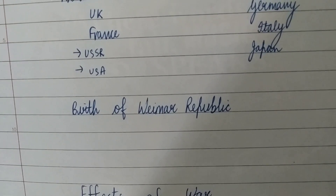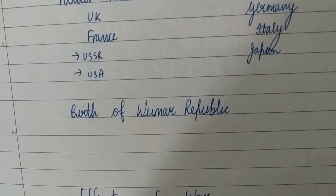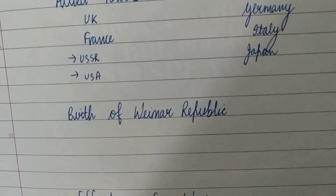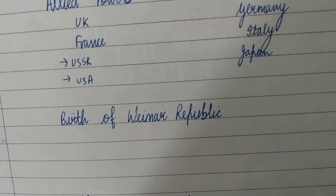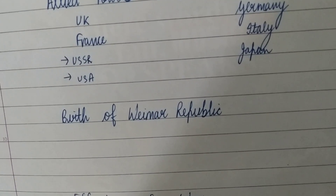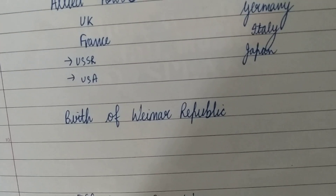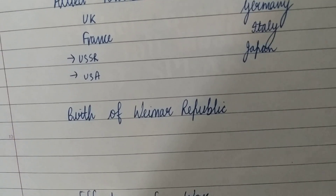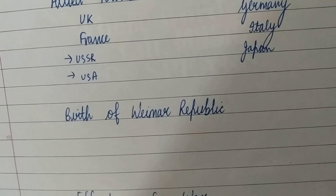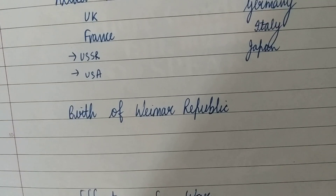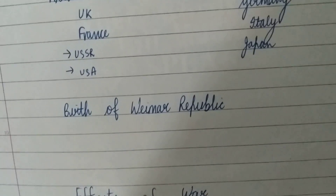The Treaty of Versailles — the peace treaty — took place with the Allies and it was very harsh and humiliating. Germany lost its colonies, one-tenth of its population, 13% of territories, 7.5% of iron, and 26% of coal to France, Poland, Denmark, and Lithuania. Germany was demilitarized by the Allied powers and held responsible for the damages caused. Germany had to pay 6 billion euros as compensation.